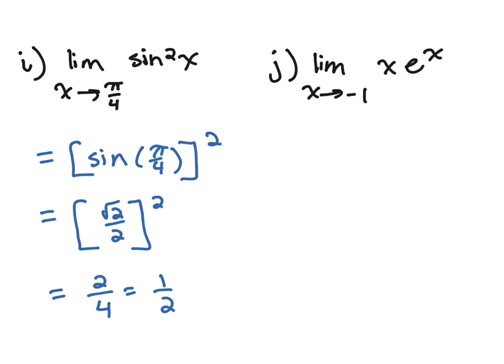For problem J, we plug in a negative 1 here. We just get negative 1 times e to the negative 1. And that's not very pretty to look at, so we're going to clean it up and move our negative exponent term to the denominator. This would be negative 1 over e.